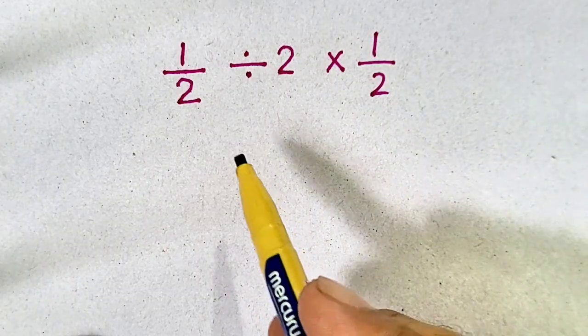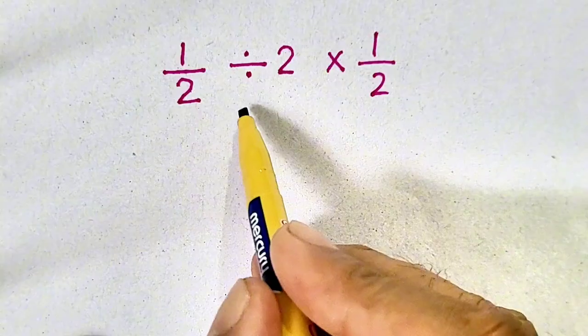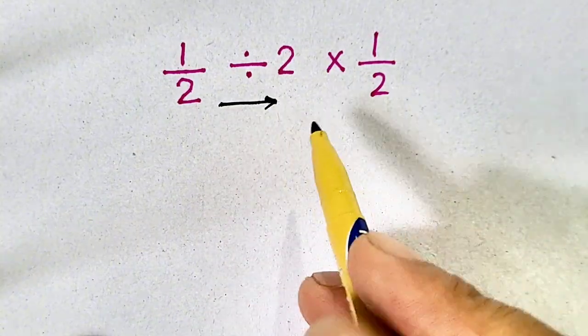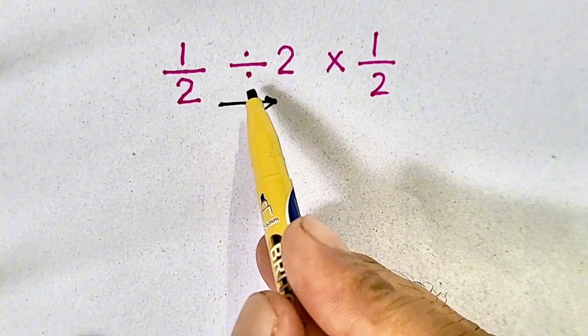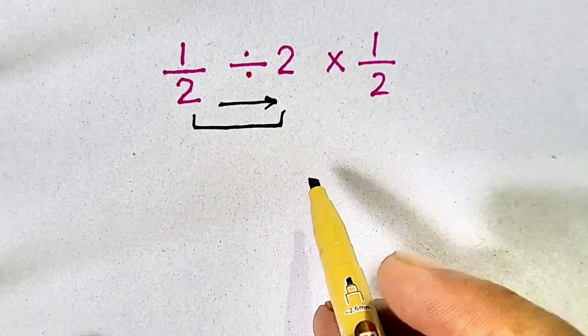Now, come to the correct method of solution. First of all, we have to move from left to right and we have to divide first. So, it is done by using KCF.